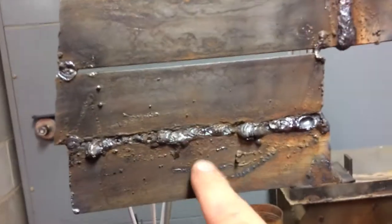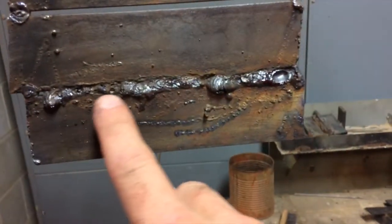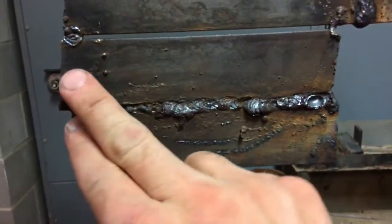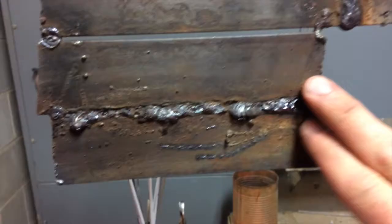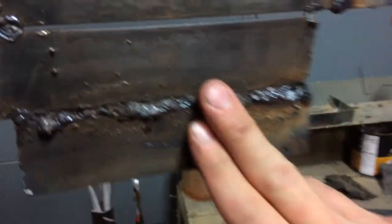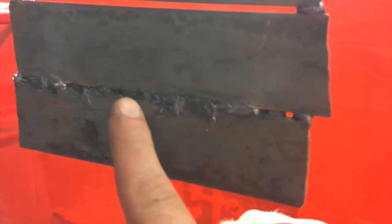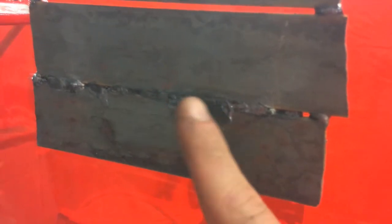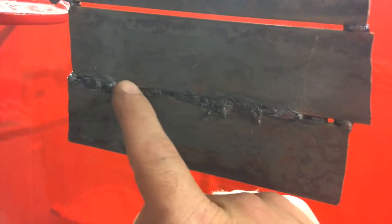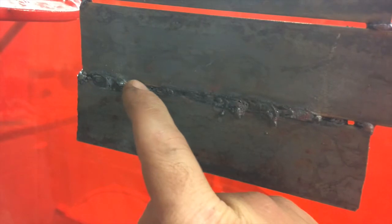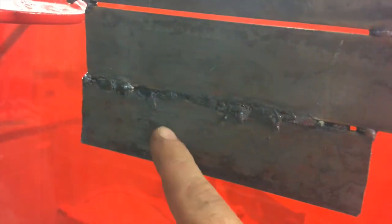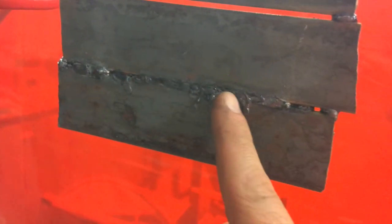What we're going for on this—I know this doesn't look pretty but we'll have two cover passes over this. What we're really concerned about is right here. We want this to have fusion. You can see here we have good fusion, over here we don't have complete fusion where you can see the line of the metal.